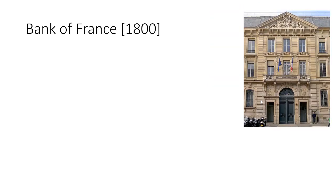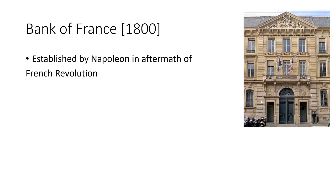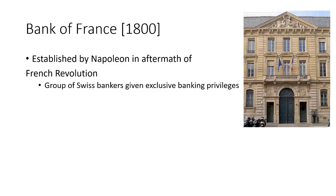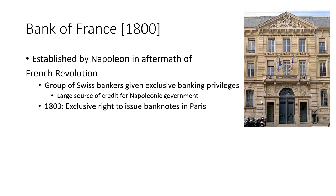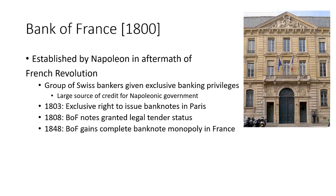The Bank of France, similar to the Bank of England, was founded by Napoleon in 1800 in the aftermath of the French Revolution. Napoleon founded a government bank because he was at war with most of Europe and needed money — a classic pattern one bank where the government establishes the bank, gives them privileges, and depends on them for loans. A group of Swiss bankers were given exclusive banking privileges and served as a large source of credit for Napoleon's government. They received the exclusive right to issue bank notes, first in Paris and then expanding to the rest of the country, with Bank of France notes eventually granted legal tender status.